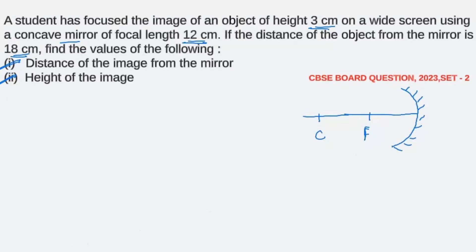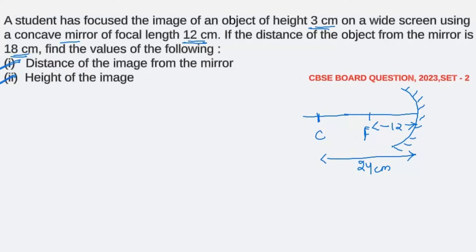Here we have a concave mirror and the focal length is given as 12 centimeter, so this distance is 12 centimeter. The object is placed at 18 centimeter. Before we place the object, let's understand one thing: if our focal length is 12, our center of curvature should be 24, because twice the focal length is the center of curvature or the radius of curvature. So the center of curvature is at a distance of 24 centimeter. Our object is situated at a distance of 18 centimeter from the mirror.